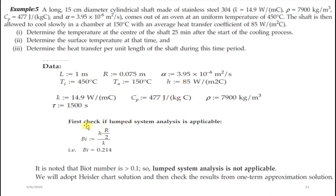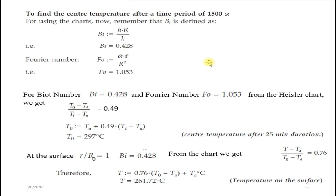First, check the Biot number using Bi = h(r/2)/K (where lc = r/2 for cylinder) to determine if lumped system analysis applies. Bi = 0.2, which is greater than 0.1, so lumped capacitance method is not applicable. We adopt the graphical method. For the graph, Biot number is calculated as Bi = hR/K (using lc = R, the full radius) giving Bi = 0.428, and Fourier number Fo = 1.053.